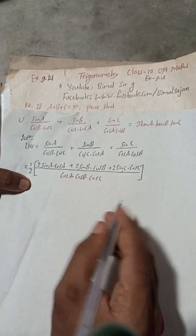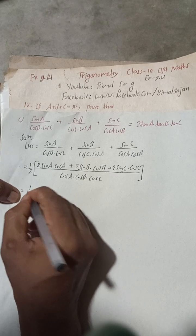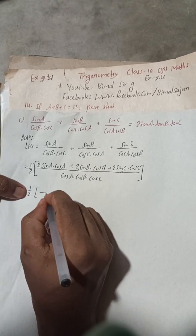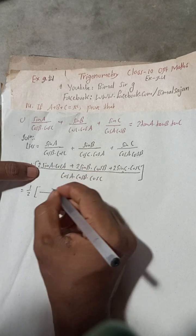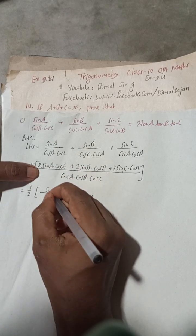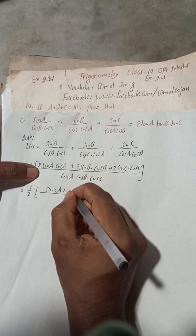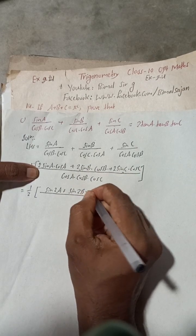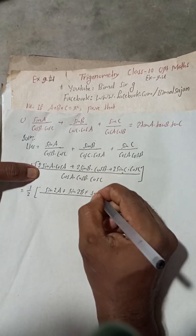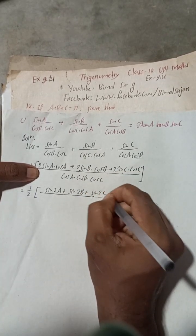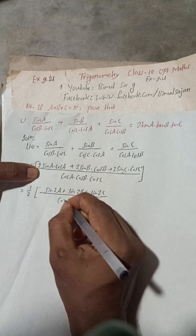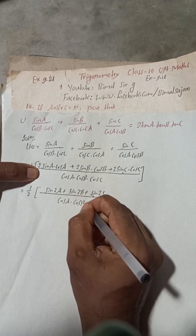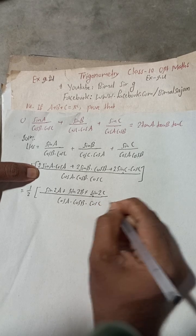Now this is equal to one-half times: two sin A cos A is the formula for sin 2A, two sin B cos B is the formula for sin 2B, and two sin C cos C is the formula for sin 2C — and this is all over cos A cos B cos C.